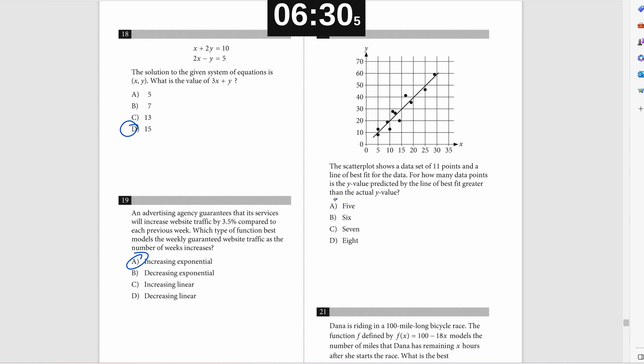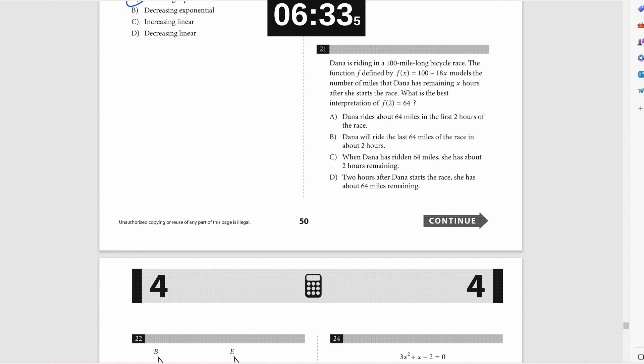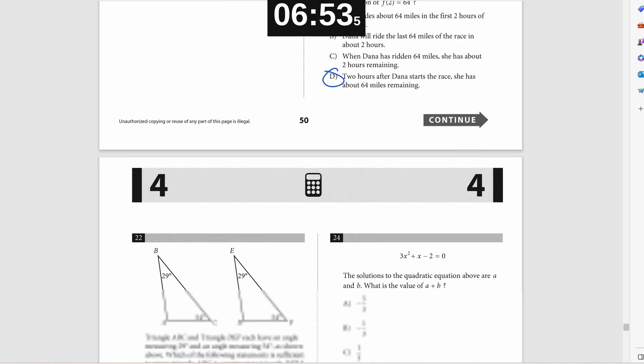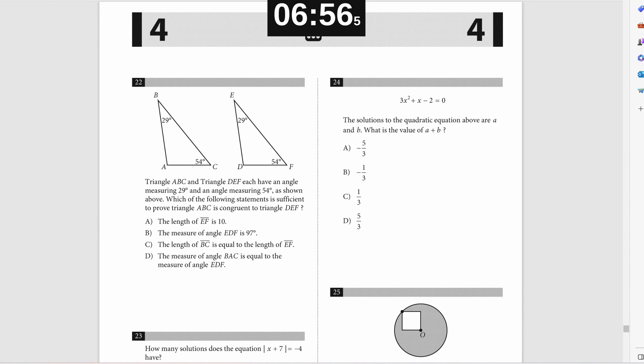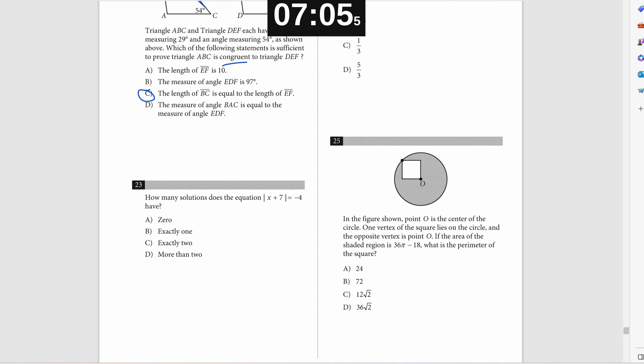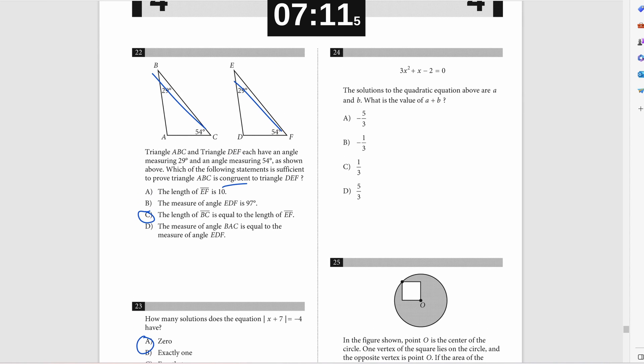Problem number 21. So this is just kind of getting it conceptually what the function's referring to. So if X is the hours after the race has started, then two is the hours after the race has started. And if F of X is referring to the number of miles remaining, then 64 is the number of miles remaining. So it's saying two hours after it started, there are 64 miles remaining. Problem number 22, you're trying to prove congruency. You can prove congruency with angle side angle. So BC and EF are the same length and you have angle side angle congruency. Problem 23, you can't set an absolute value equal to a negative and solve for X. So there's zero solutions.